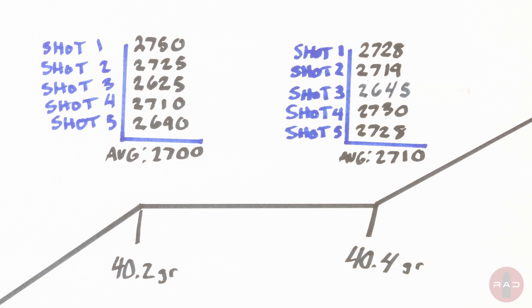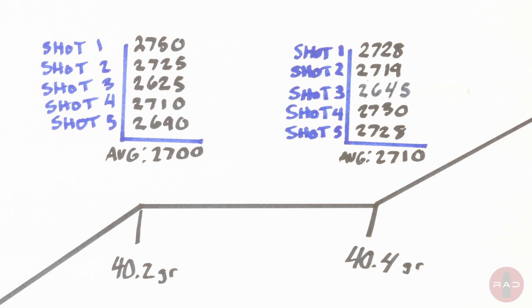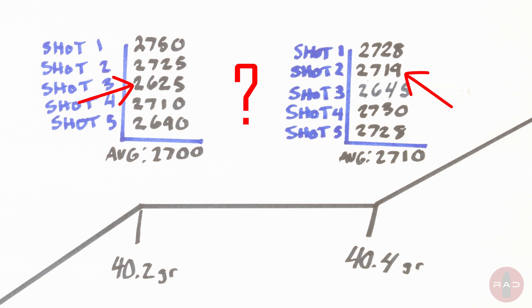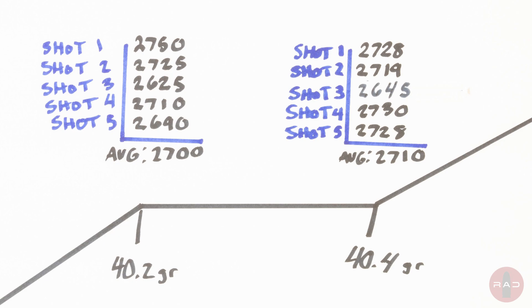We can see this very apparently with one-shot load development ladder tests. How do we know, looking at this graph and the 40.2 and 40.4 charge weights, that this one shot — which was the fifth in a five-shot sample for 40.2 grains — is actually going to be the velocity we compare to 40.4's fifth shot? At this point you have a one-in-five chance of yielding any of these velocities to determine a quote-unquote velocity node. Velocity will completely change with environmentals, and the same logic applies with low sample size testing of just five rounds.